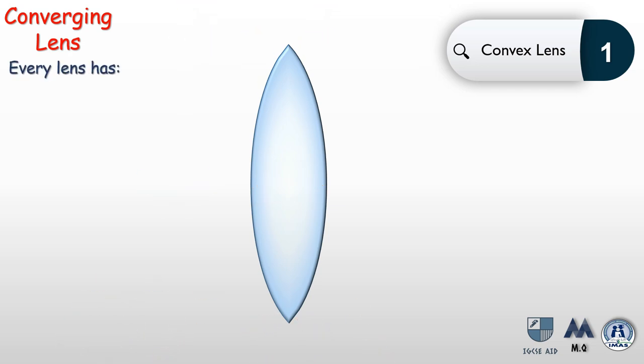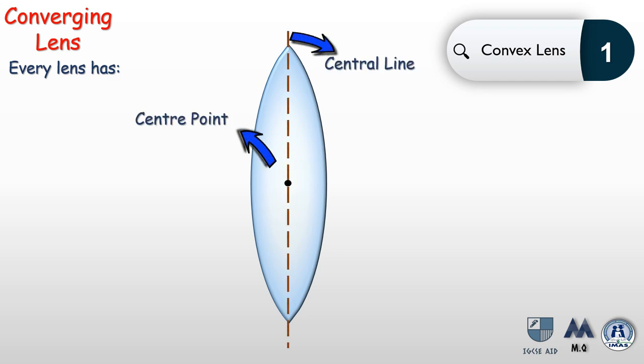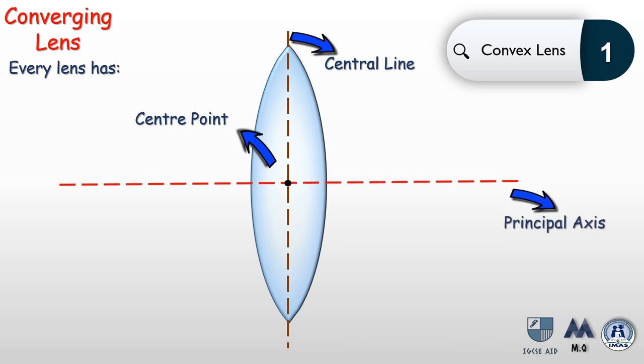Every lens has a center point exactly at its center, a central line passing through that point, and a principal axis which is a line 90 degrees to the central line that also passes through the center point. Those are some of the key terms used to describe a convex lens.